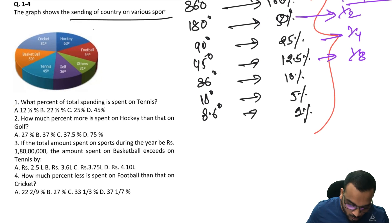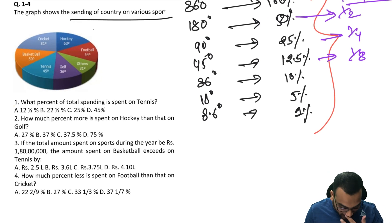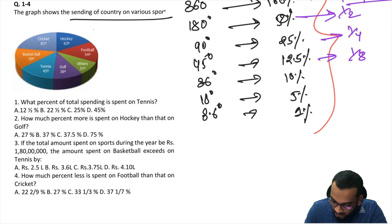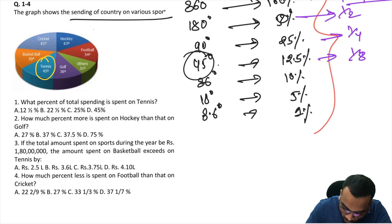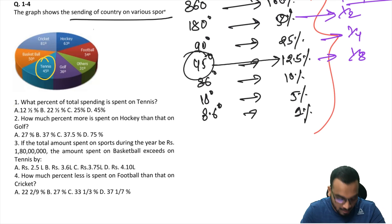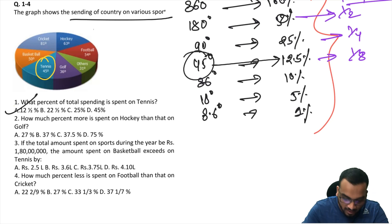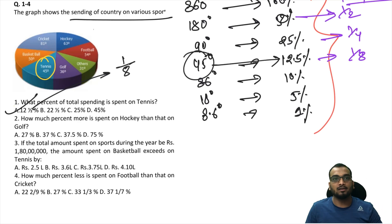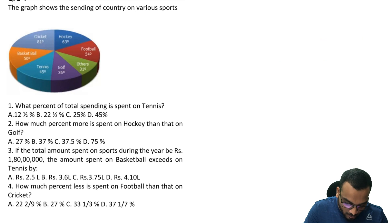The pie chart shows spending of a country on various sports. Question 1: What percent of total spending is spent on tennis? The tennis value is 45 degrees. Using the benchmarking rule, 45 degrees equals 12.5%. That's the answer for question 1.